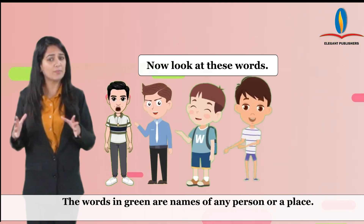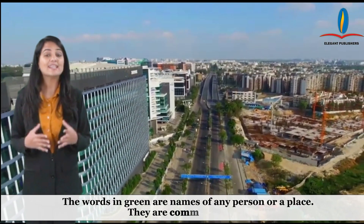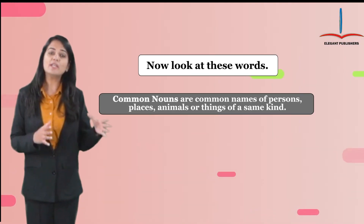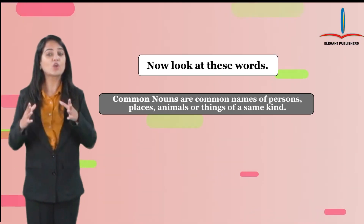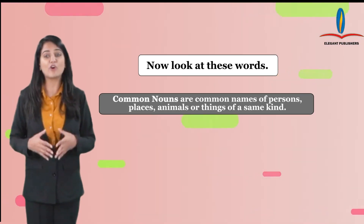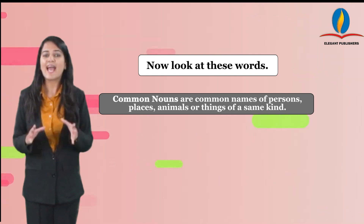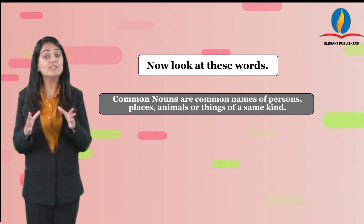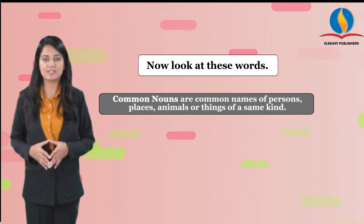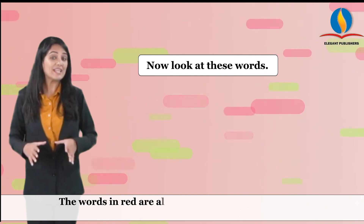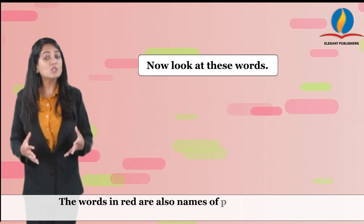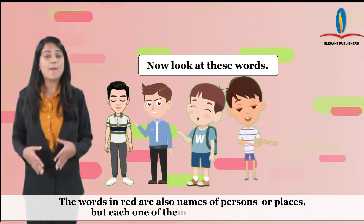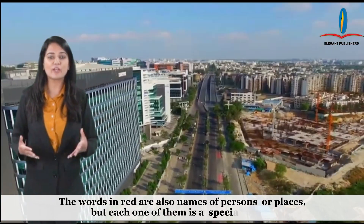They are common names. Common nouns are common names of persons, places, animals, or things of the same kind. The words in red are also names of persons or places, but each one of them is a special name.